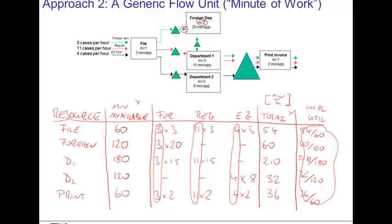The benefit of the second approach is that you have more flexibility. For example, it might be that the easy cases take 2 minutes here at printing, while the foreign account cases might take 5 minutes per case. In other words, you can make the processing time contingent on the flow units, which you can only analyze with the second approach. The second approach, however, comes at the expense that it is conceptually a little bit more difficult because you have to think about the generic flow unit being one minute of work.